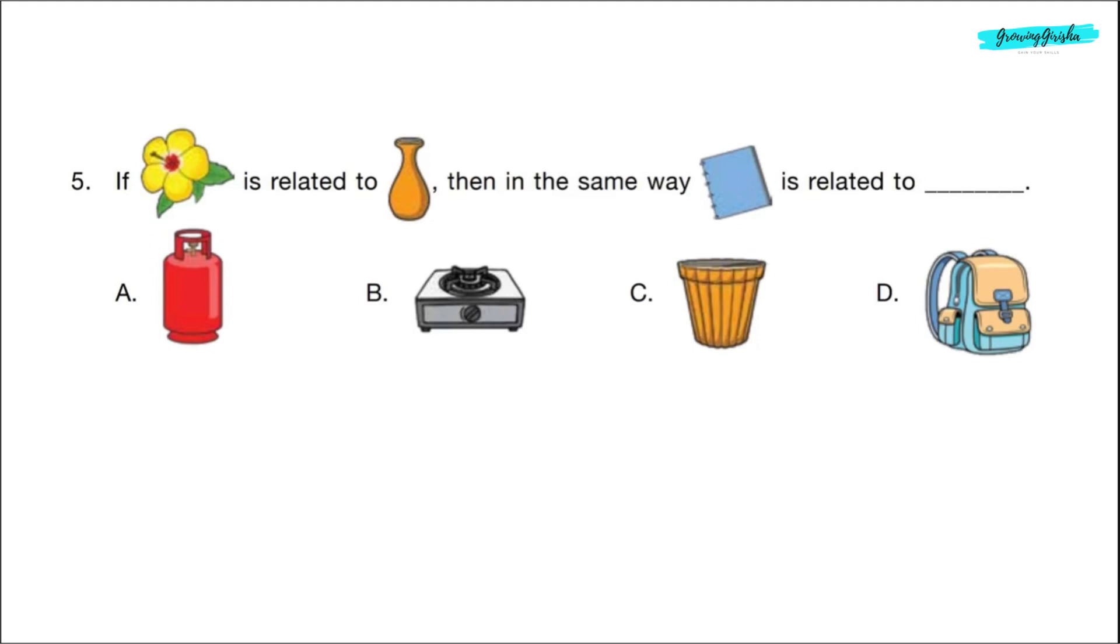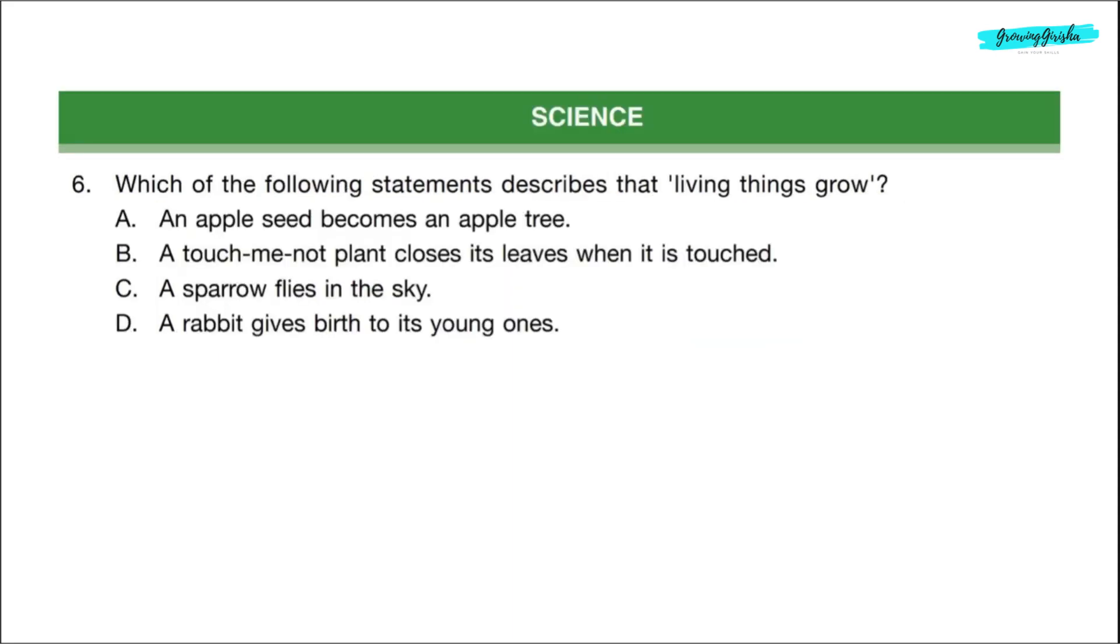Question 5. If flower is related to flower vase, then in the same way, notebook is related to dash. We keep flower in flower vase. In the same way, we keep notebooks in bag. Correct answer is option D. Question 6. Which of the following statements describes that living things grow? An apple seed becomes an apple tree. Apple seed grew into an apple tree. This statement describes that living things grow. Correct answer is option A.